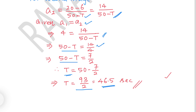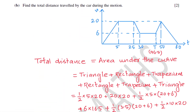Now find the total distance travelled by the car during the motion. Distance is the area under the velocity-time graph. The total graph is divided into six parts: a first triangle, then a rectangle, then a trapezium, then a rectangle, then another trapezium, and finally a triangle.